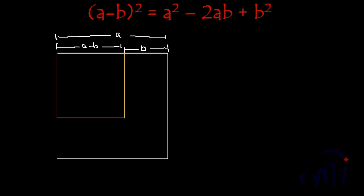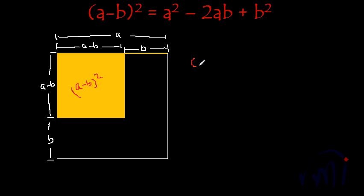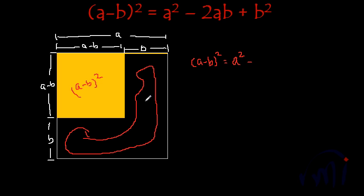So this is the square I was talking about — a square whose one dimension is a minus b, so this much is a minus b. Since the bigger square is of dimension a by a, the remaining will be b. And the area of this yellow square will be a minus b whole square. The area of the bigger square will be a square. So a minus b square is actually equal to the area of the bigger square, which is a square, minus the L-shaped area. If we remove that L-shaped area from a square, we will get a minus b whole square.